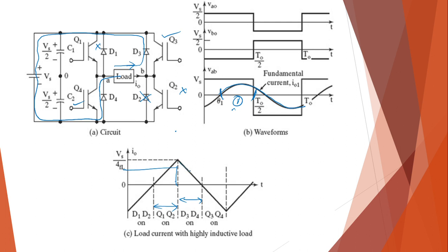Once the inductive current becomes zero, only at that moment Q3 and Q4 start operating. Although Q3 and Q4 were turned on earlier, they cannot operate because of the reverse current. They operate only when the current reaches zero. Then in the next half cycle, instead of D3 and D4, you have D1 and D2 freewheeling. This is the operation of the circuit for both resistive and inductive loads.